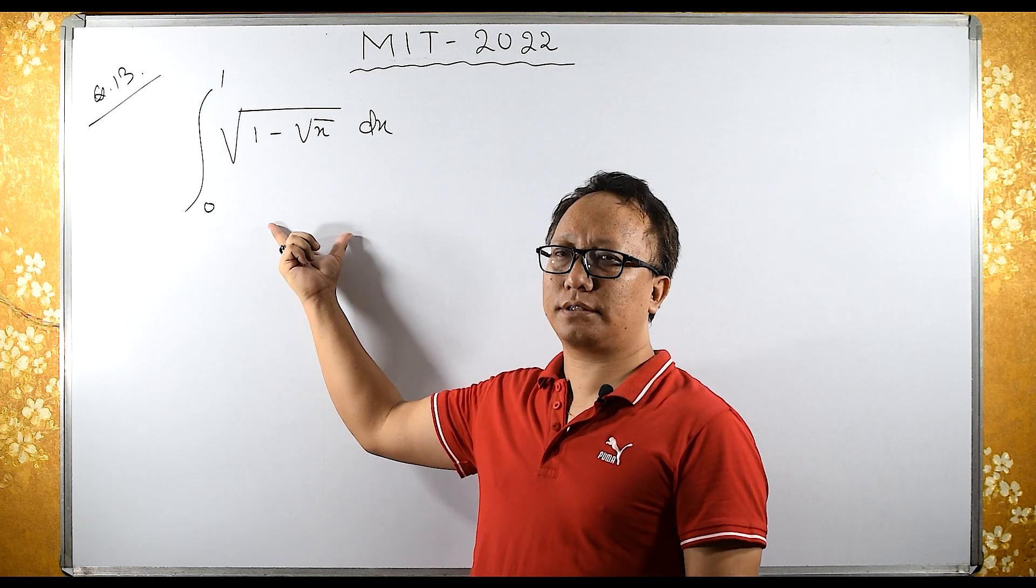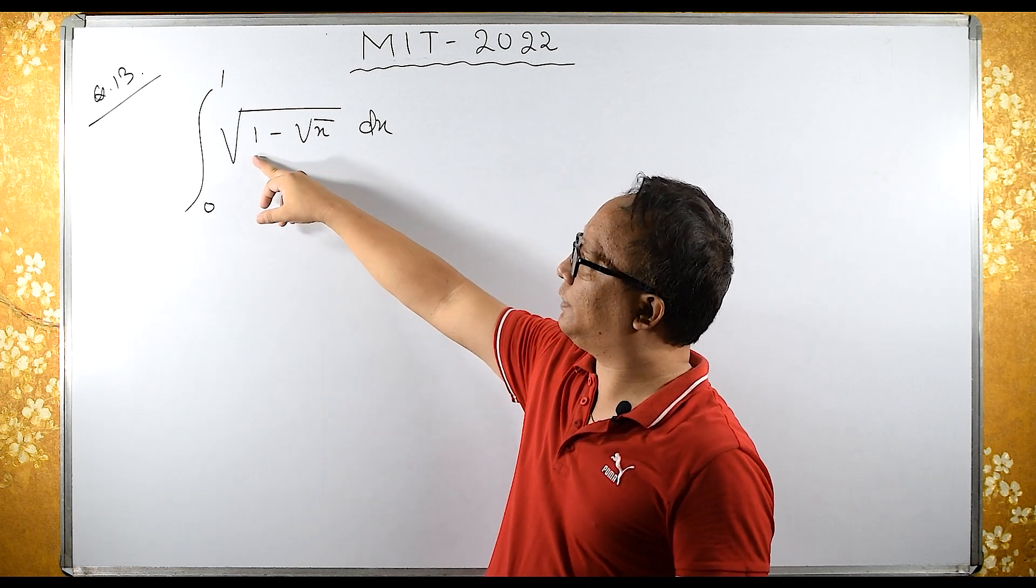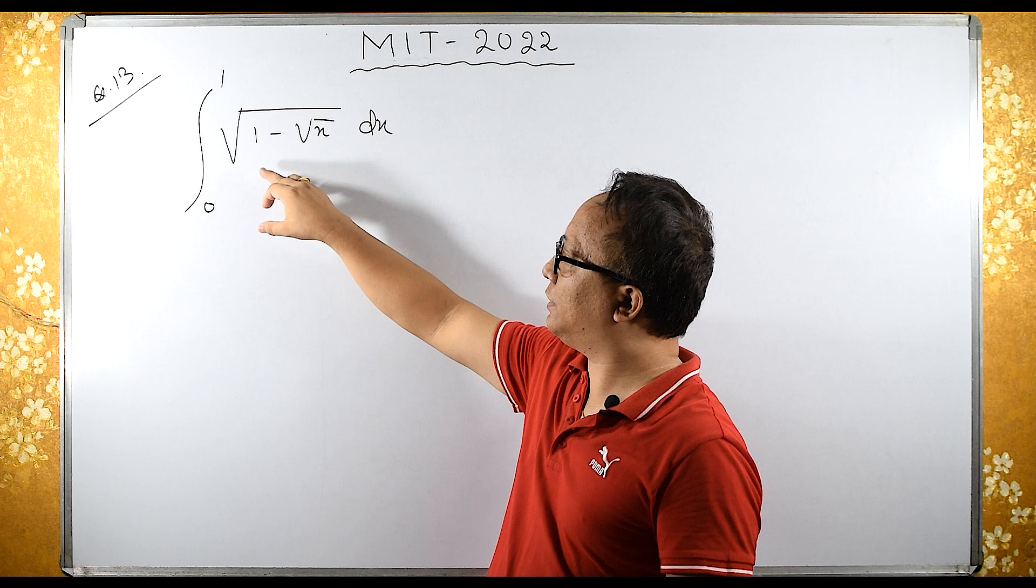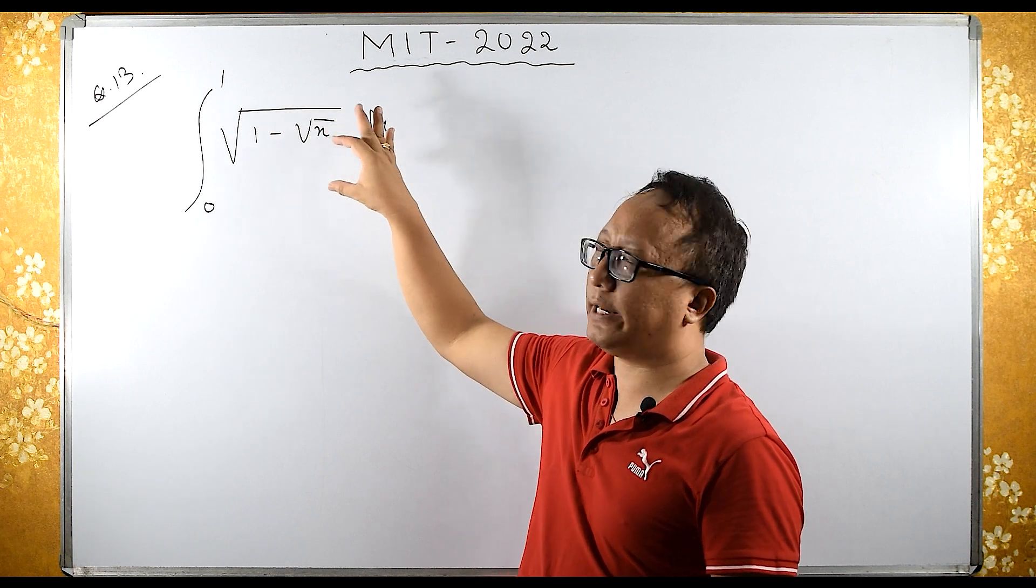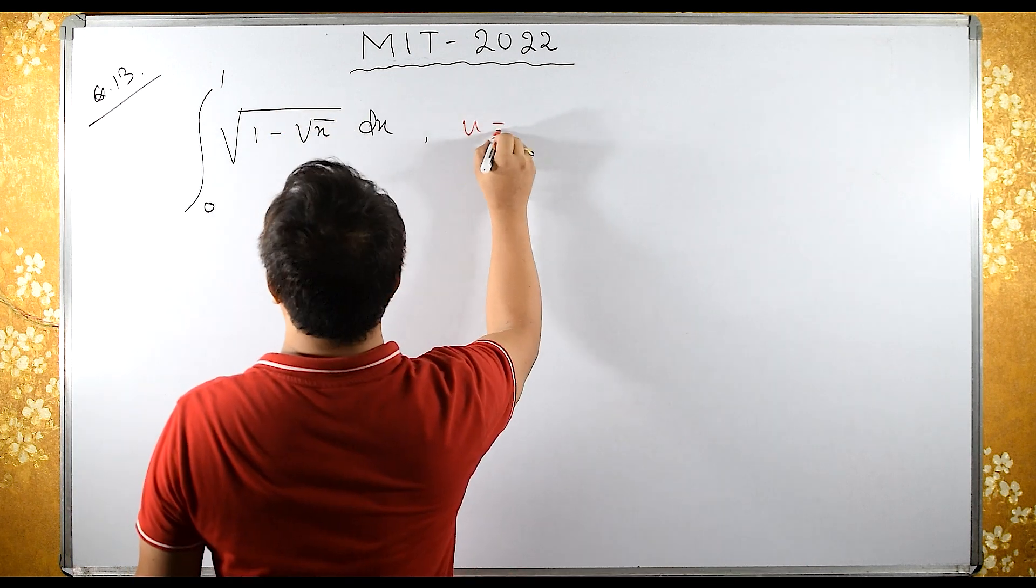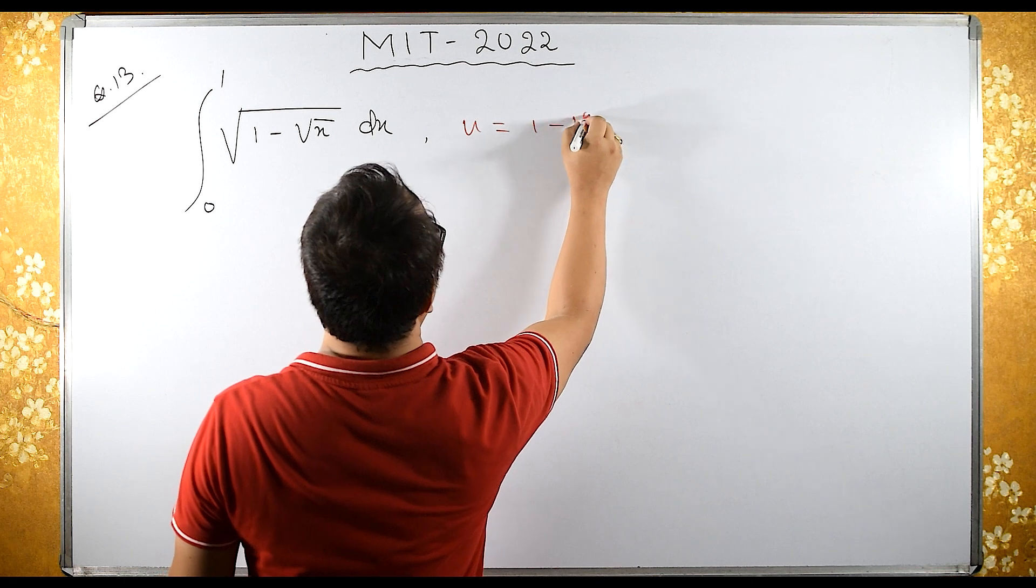This question looks somehow easy. We can substitute the expression inside the bracket as u and see how it works. Let u equals 1 minus root x.